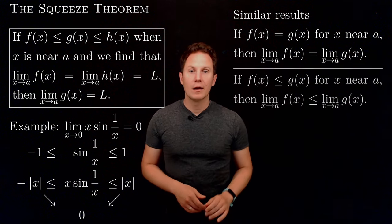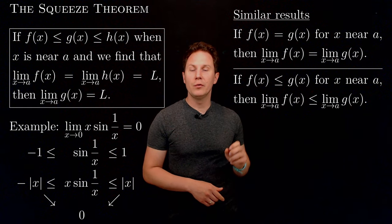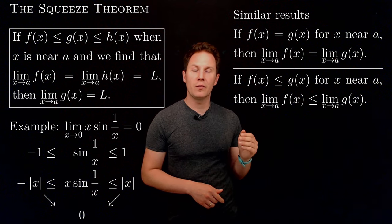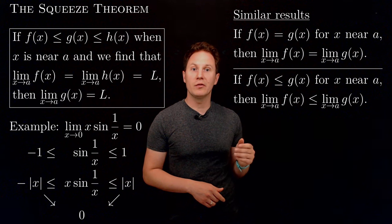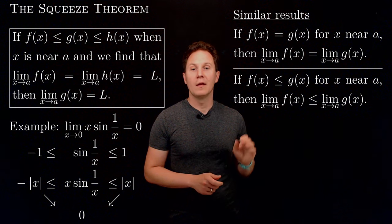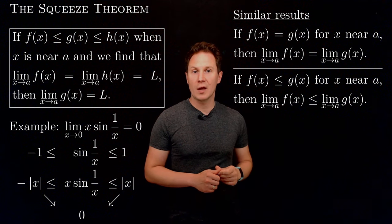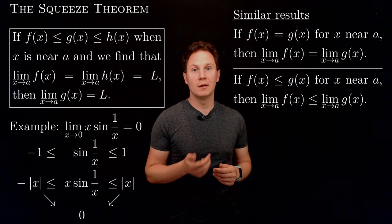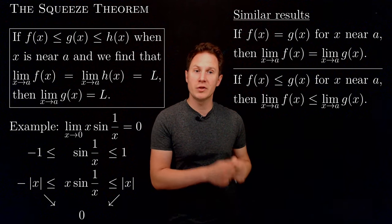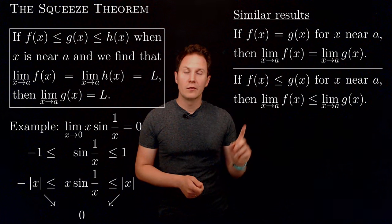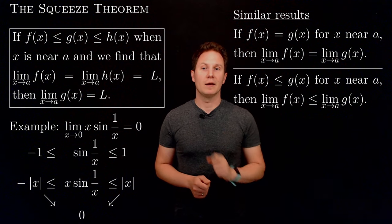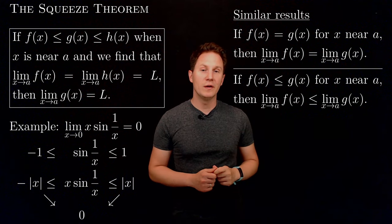The second result I want to show you tells us that if f(x) is less than or equal to g(x) for x near a and their respective limits exist, then the limits will be related in the same way — namely, the limit of f(x) will be less than or equal to the limit of g(x). This second result actually implies the squeeze theorem.